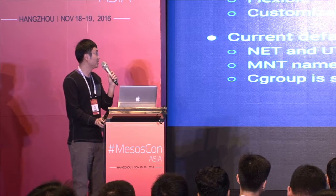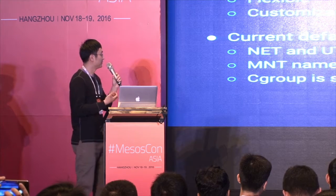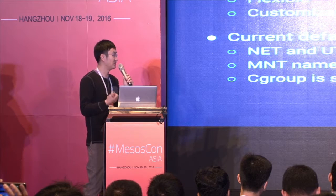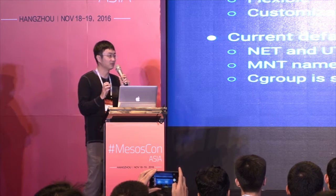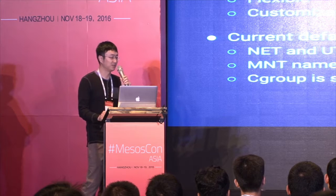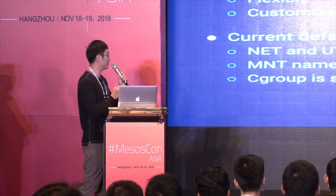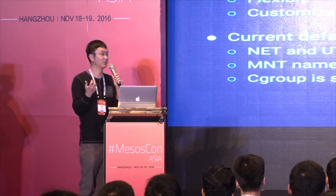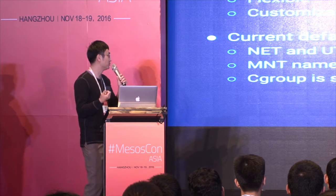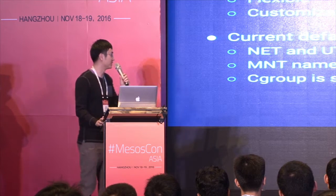The namespace configuration for nested containers is determined by the isolator. For example, the default isolator creates a new network namespace and UTS namespace for each nested container. The mount namespace is shared because every container may have a different Docker image. The cgroup configuration is similarly handled by the isolator.